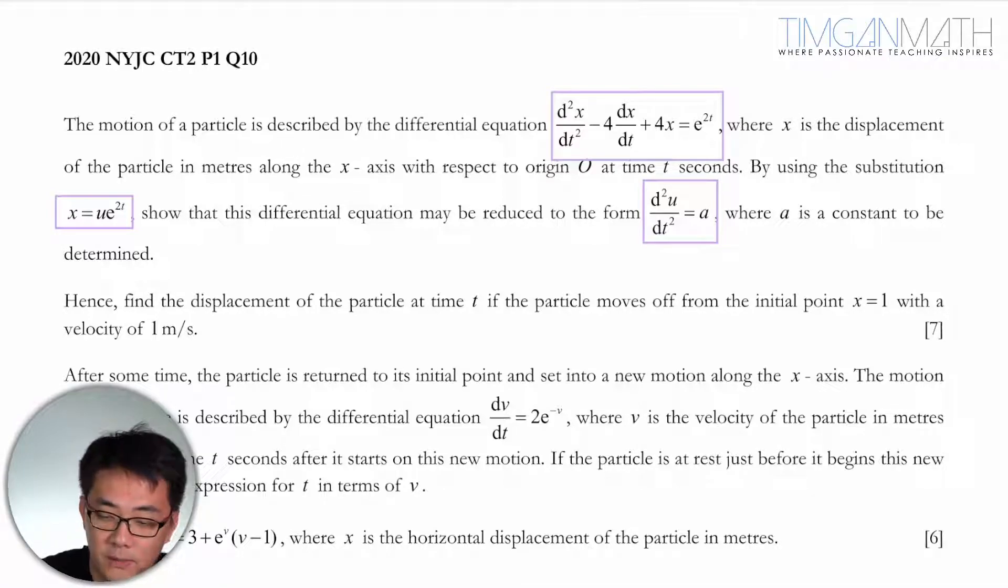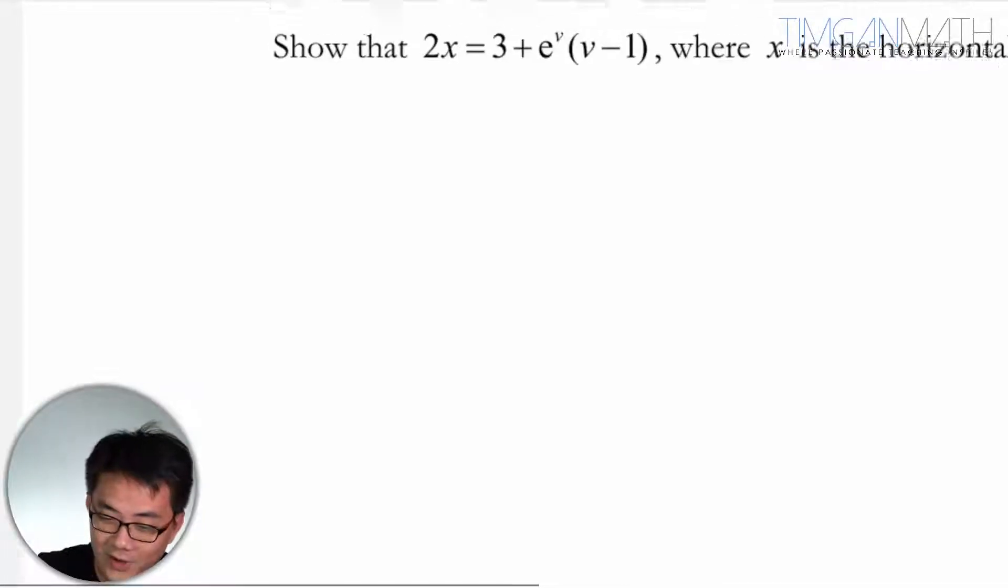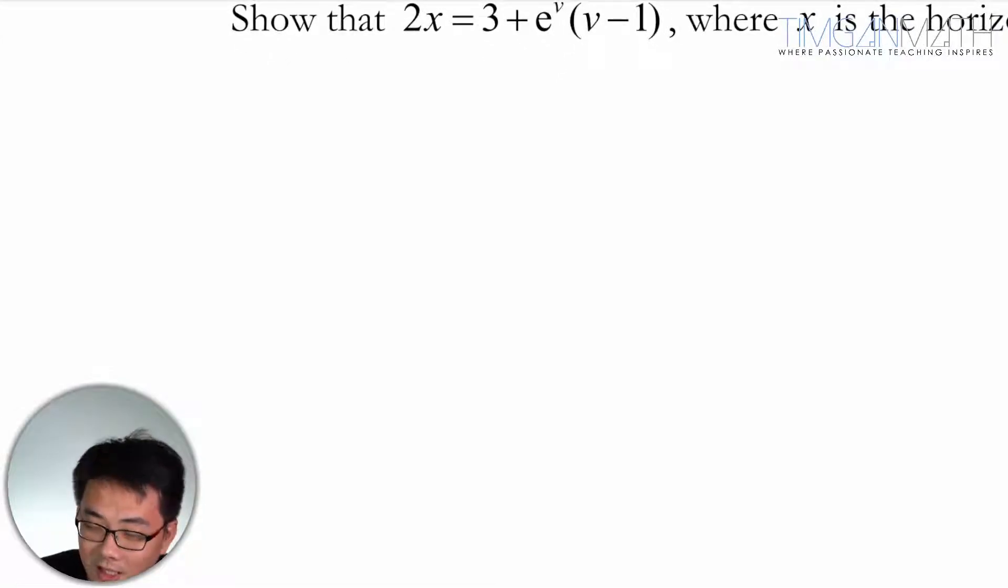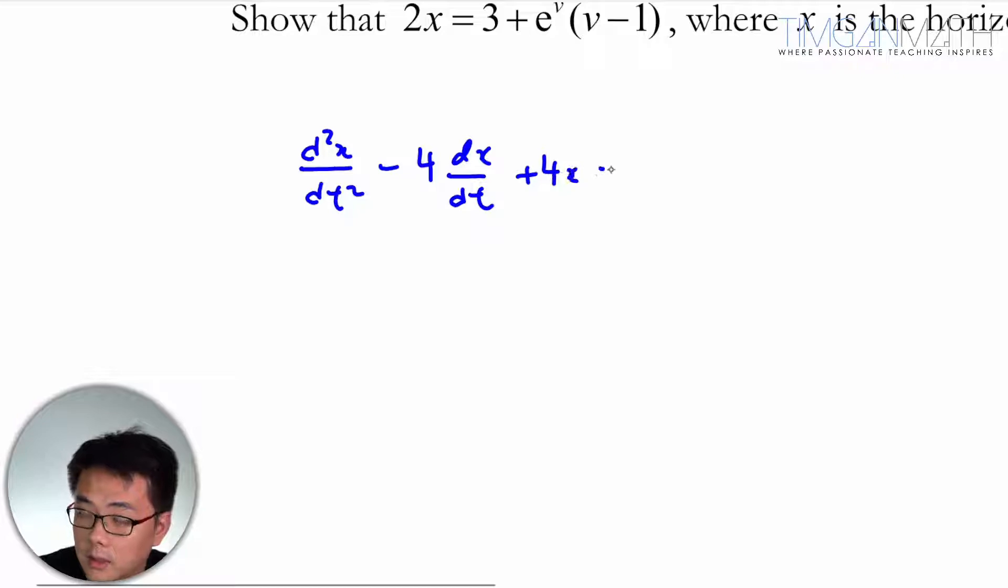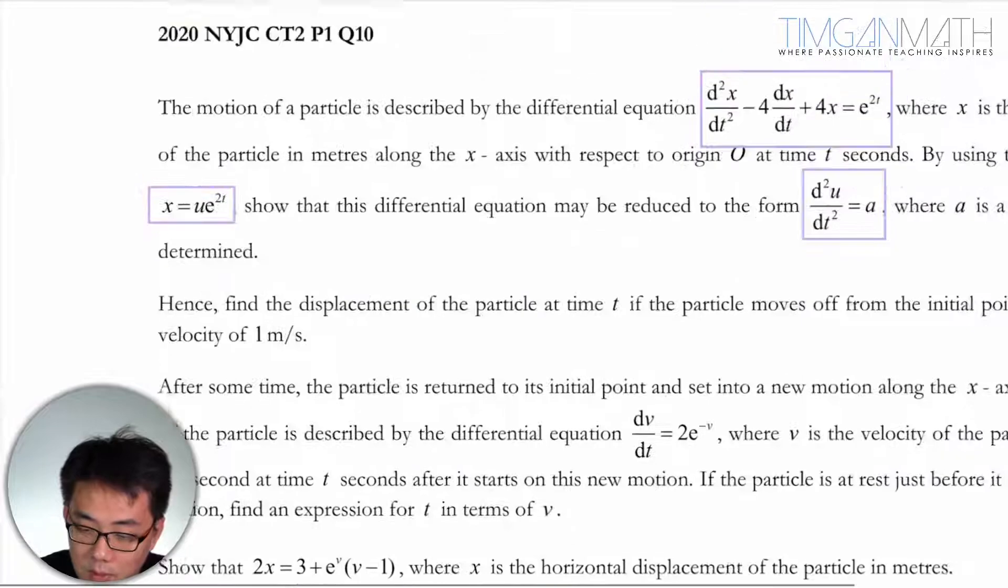I'm going to do the first part first. Let me copy down the equation: d²x/dt² - 4dx/dt + 4x = e^(2t). Now we're going to use the substitution x = ue^(2t).